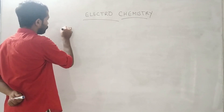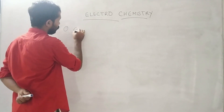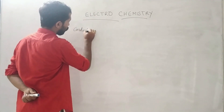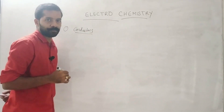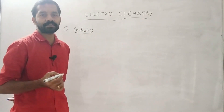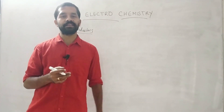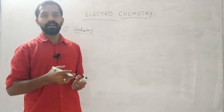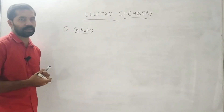In this chapter, we learn about conductors. The substance that allows the passage of electricity is called a conductor.